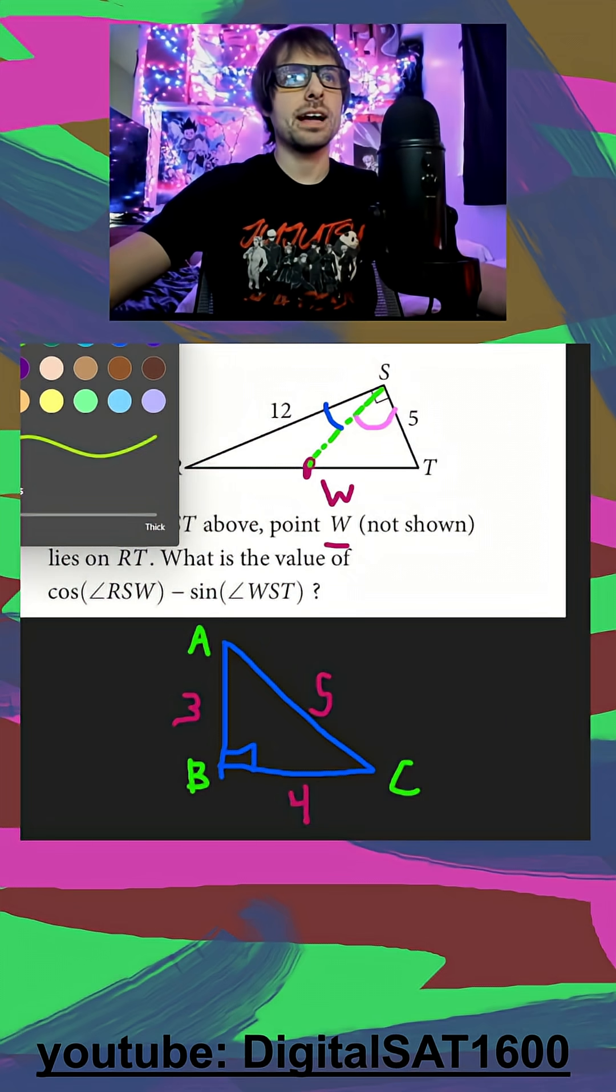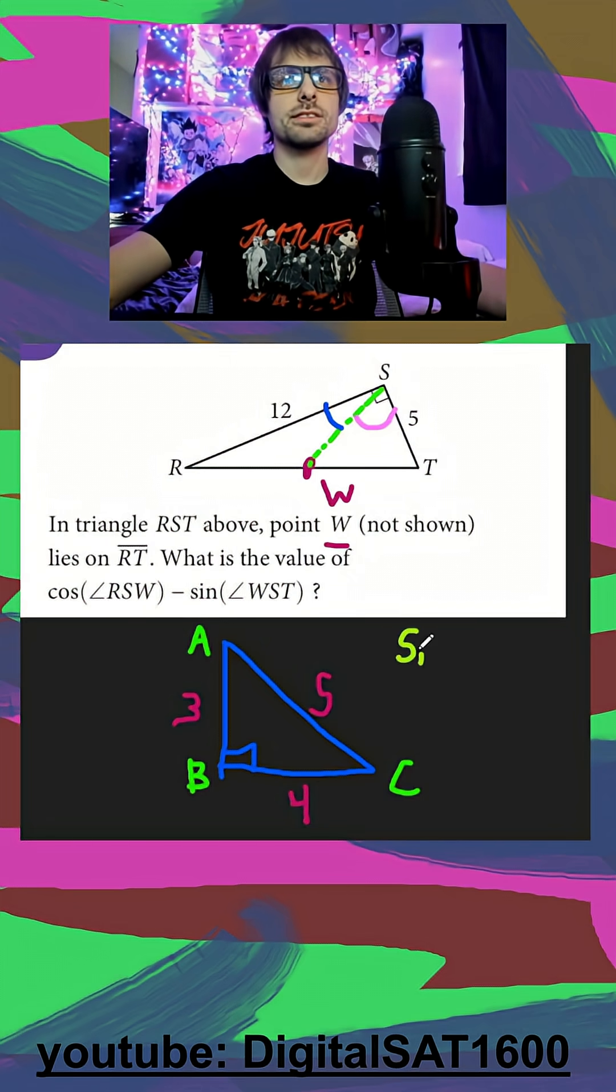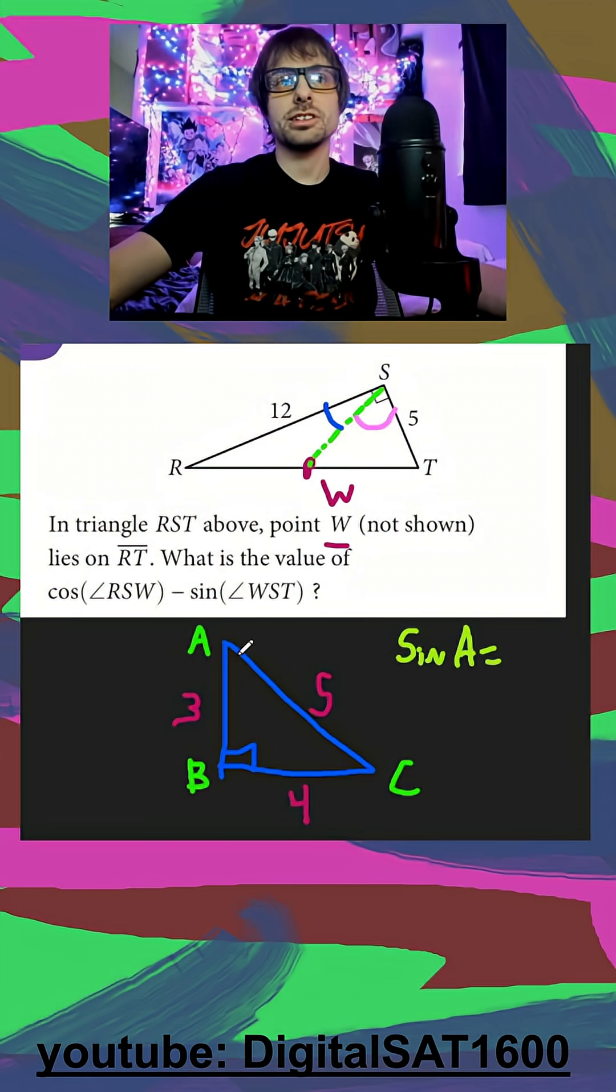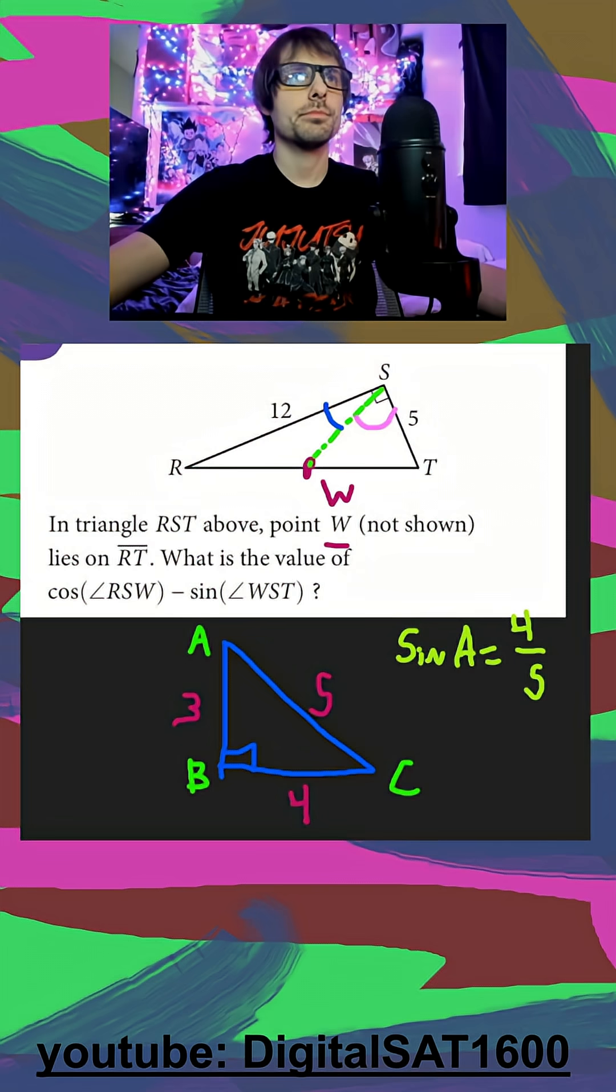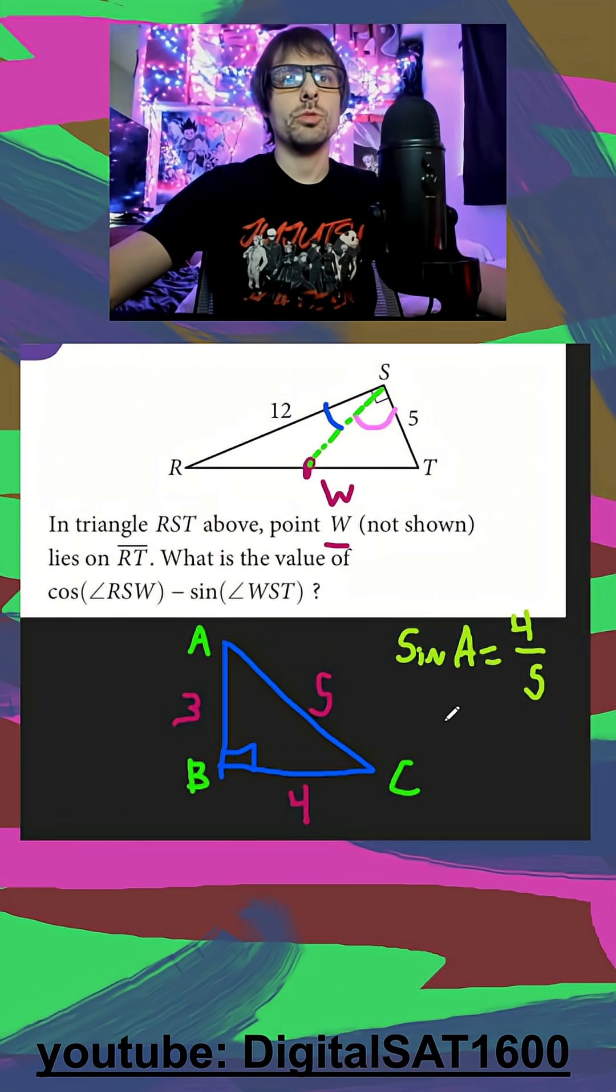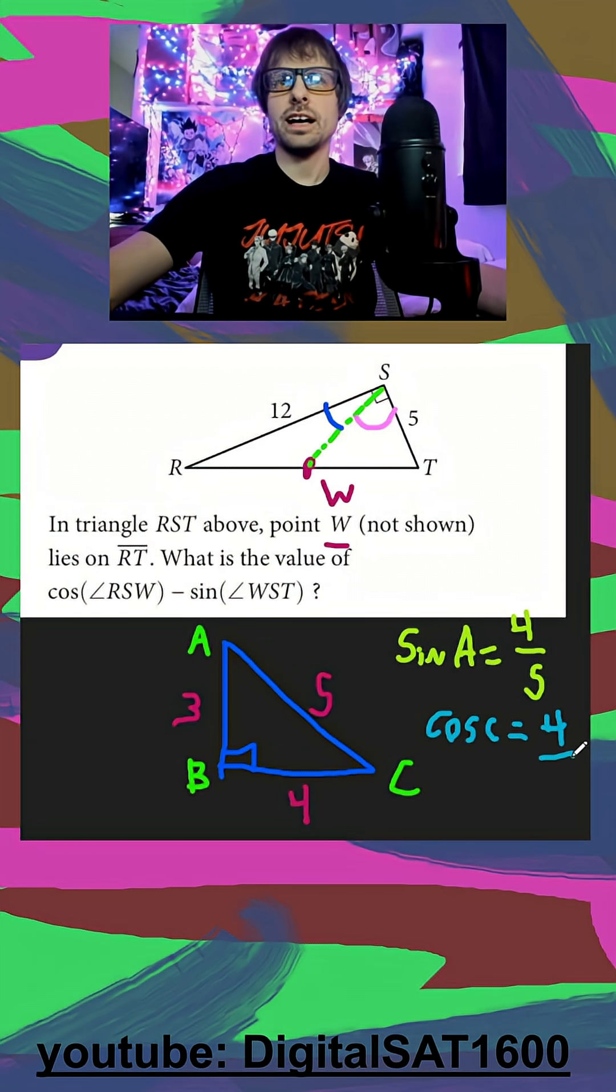And we can do something similar to what they're asking. We can say, okay, well, what is the sine of A here? And the sine of A is just going to be our opposite over our hypotenuse. So 4 over 5. And then we can say, okay, well, what is the cosine of C? And that's going to be our adjacent over our hypotenuse, 4 over 5.